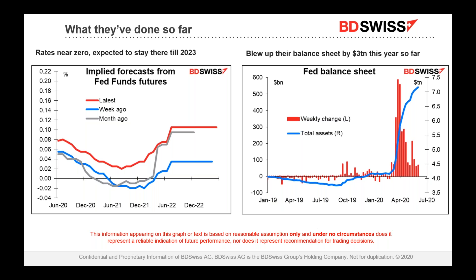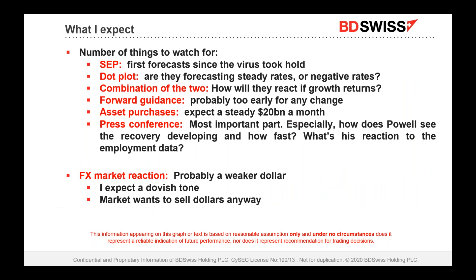They've also blown their balance sheet up fantastically. At one point in recent weeks they were buying $600 billion a week in bonds; now they're down to about $4 billion a week. In total they've bought $3 trillion worth of bonds and other assets so far this year — almost doubling the size of their balance sheet in two months. It's astonishing.